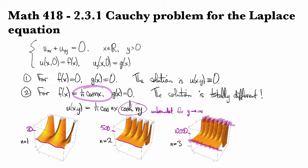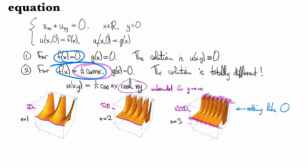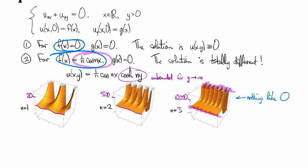So this is a highly undesirable thing. If this initial condition and this initial condition are really close to each other, then you would expect the solutions to be close to each other as well. But this here is nothing like the 0 function. It's just something totally crazy. So what we're seeing right here is the failure of this problem to be stable.